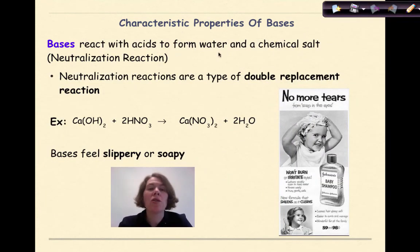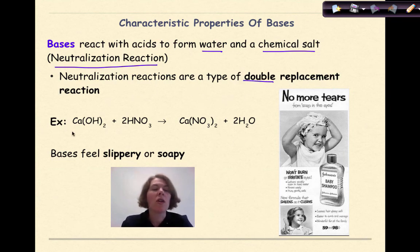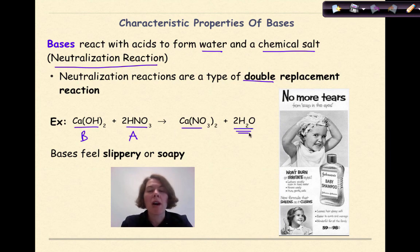Bases react with acids to form water and a chemical salt. Again, these are called neutralization reactions. And we've talked before that these are a type of double replacement reactions. So here's a situation where we have calcium hydroxide, which is our base, reacting with nitric acid, our acid right here, to form a chemical salt of calcium nitrate. And again, water as a product.